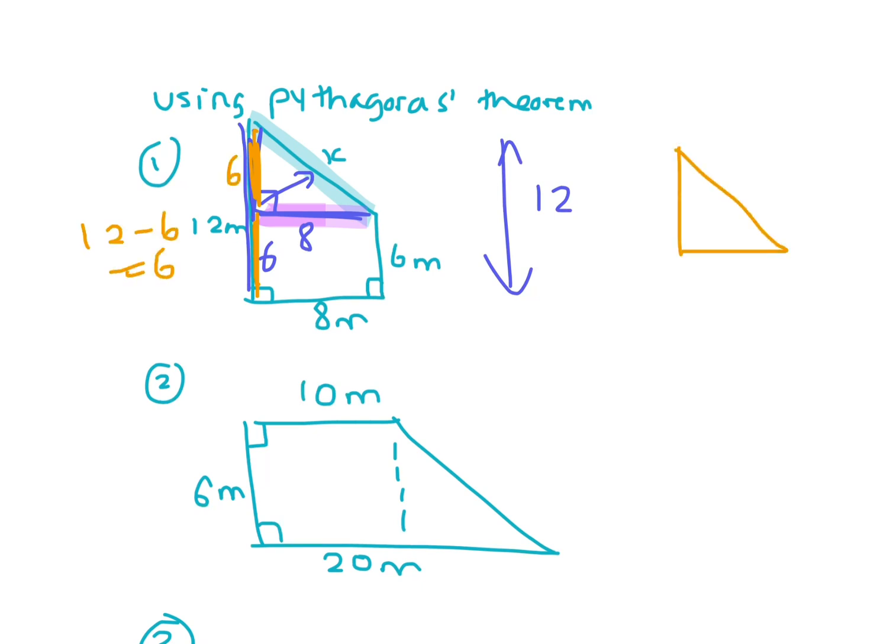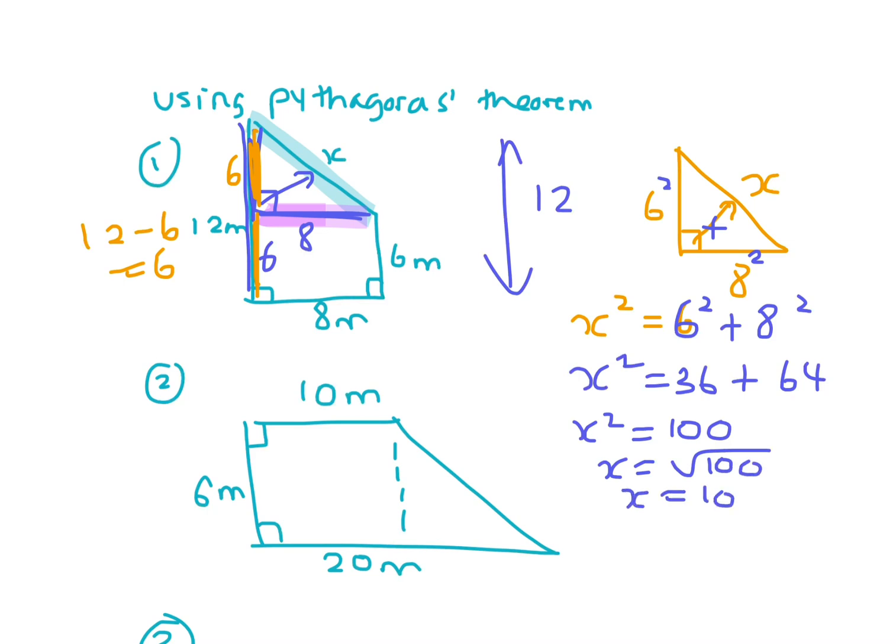So we now have this triangle, where that is 8, 6 and X. So X squared equals, because it's a hypotenuse, it'll be 6 squared plus 8 squared, because you've got to add the two small ones to get the big one. X squared equals 36 plus 64. So X squared is 100, and then square root 100, and you end up with 10.